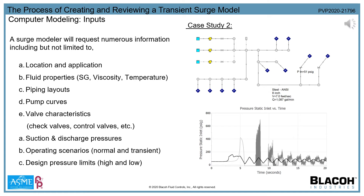Now that we've covered the high-level physics behind surge, let's discuss the computer modeling process. For those new to surge, it most often comes as a surprise how much input data is needed to complete a surge model, as well as how tedious the modeling process can be. Shown to the left is a list of the most common data inputs used in a computer surge model. In case study number two, a water system within a power plant is modeled. Initially, no valve data was provided to the modeler, who was able to convey through comparison plots the varying pressure impact the valve characteristics actually have.